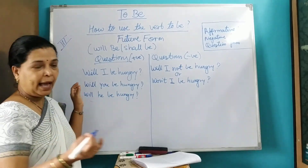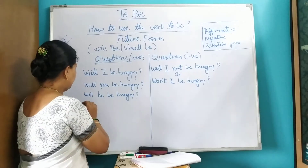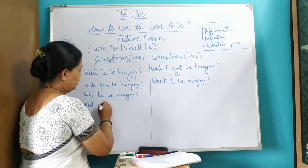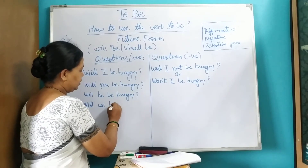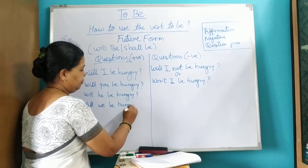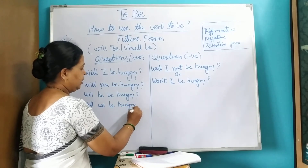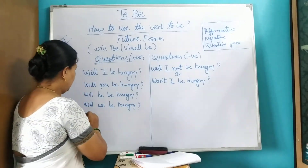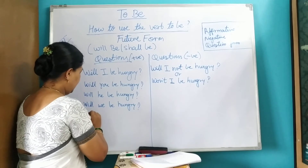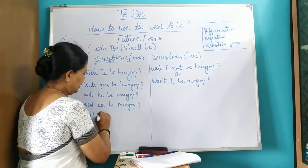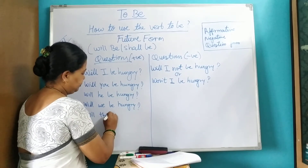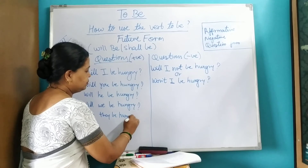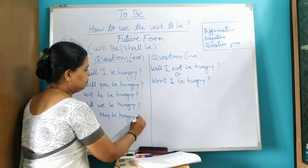Continuing with plural forms: first person plural — 'Will we be hungry?' And third person plural — 'Will they be hungry?'